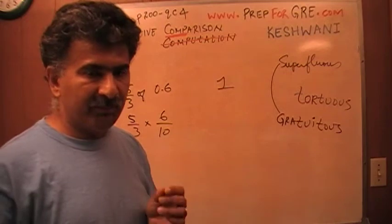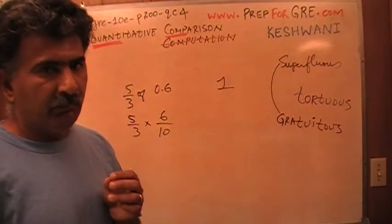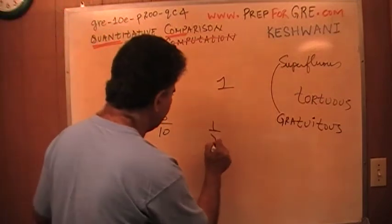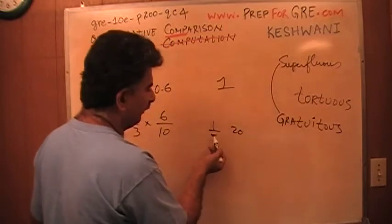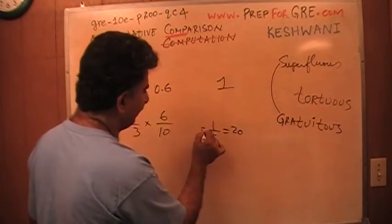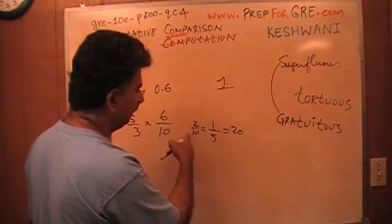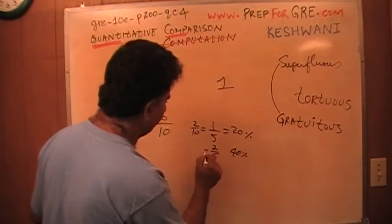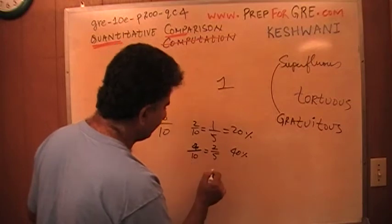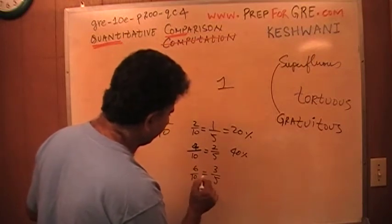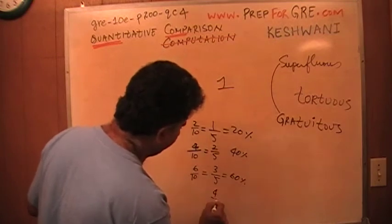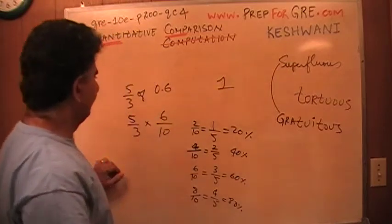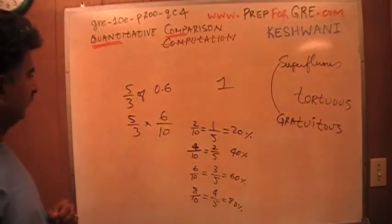You must know your fifths by heart for the exam. One-fifth is twenty percent — if you have trouble remembering it, just think one-fifth is the same as two-tenths. Two-fifths is forty percent, because two-fifths equals four over ten. Three-fifths is the same as six over ten, which is sixty percent. Four-fifths is eight over ten, which is eighty percent. So 0.6 is sixty percent, which is the same as three-fifths.